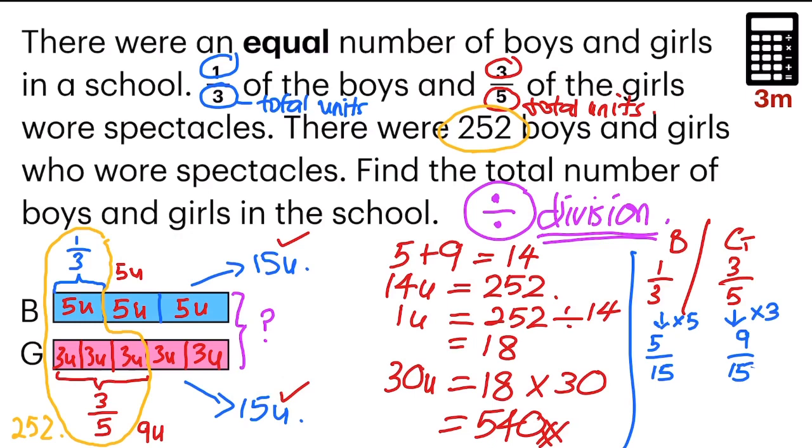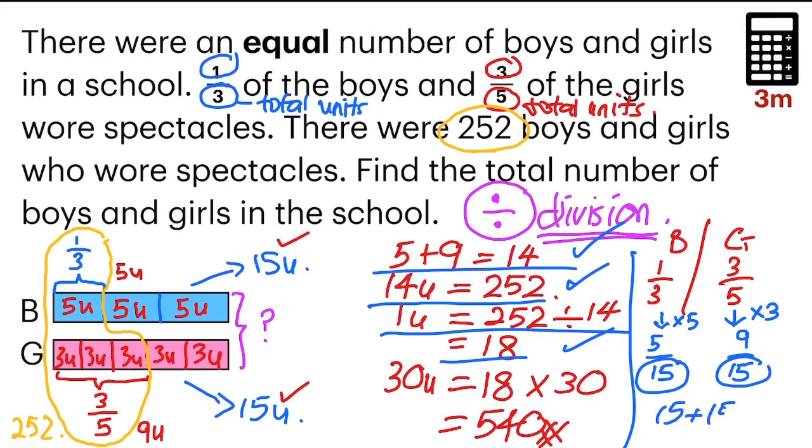And so, from here, I am going to do the same step, which is 5 plus 9 equals to 14. And I link it to 252. Same step. The next step is to find 1 unit, similar. And the last step, I will add 15 units plus 15 units, which is the sum of units of boys and girls. I get 30. So, the last step to find 30 units, 18 times 30 units, which is 540. So, there are two ways you can draw a model to see. Once you're more familiar, you can tackle it by changing it to a common denominator. Thank you.